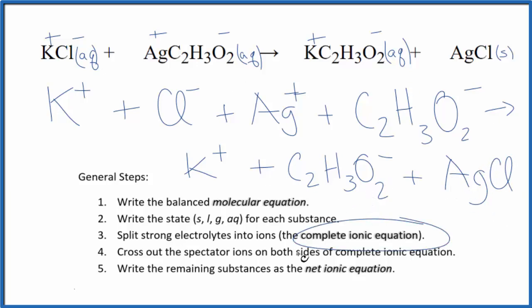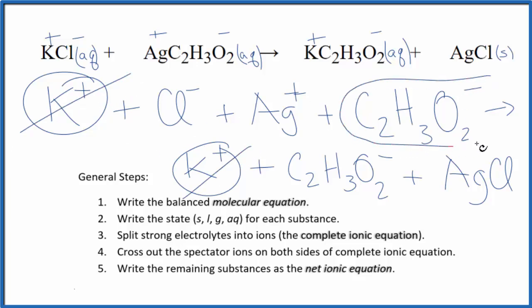Now we can cross out the spectator ions. They're on both sides of that complete ionic equation. So we have reactants and products. We have the potassium ion in the reactants and in the products. We have the acetate ion here in the reactants and here in the products.